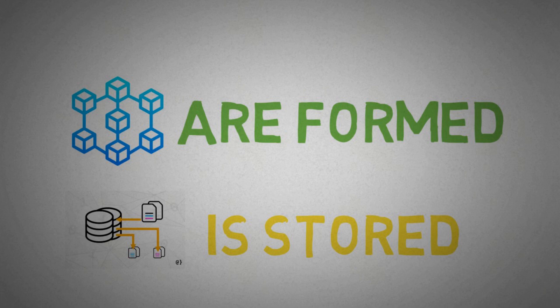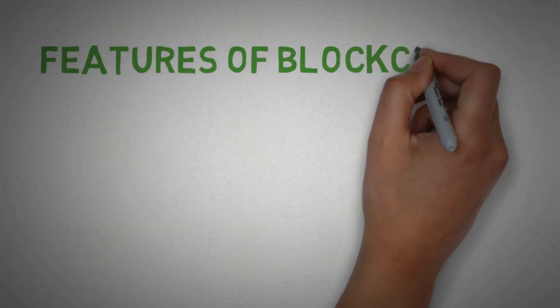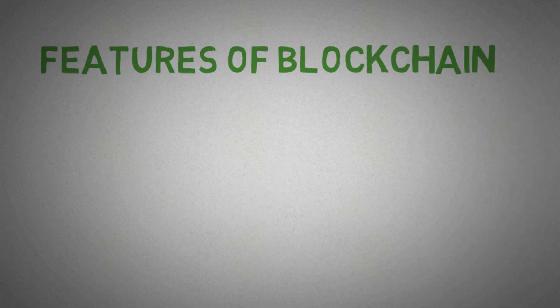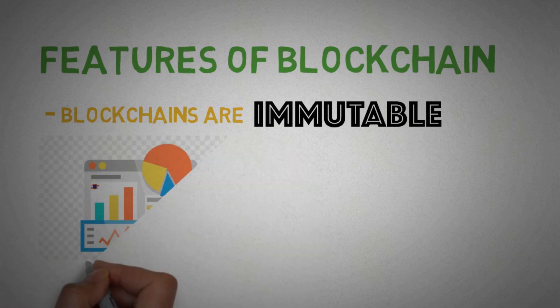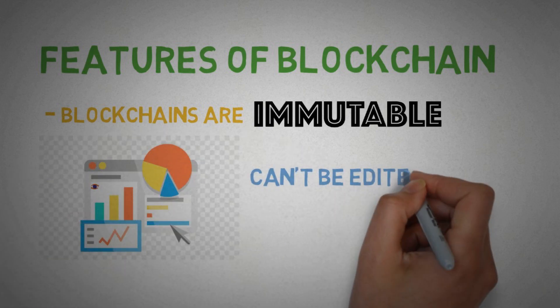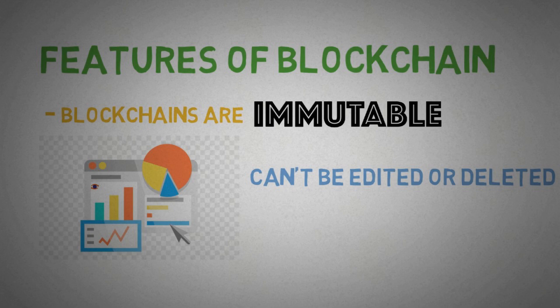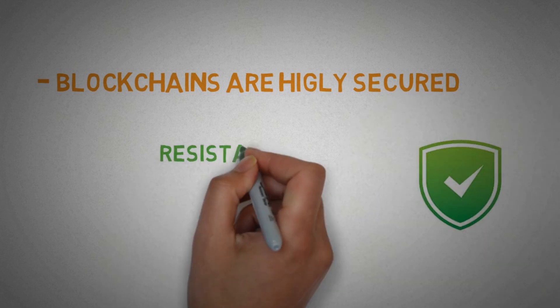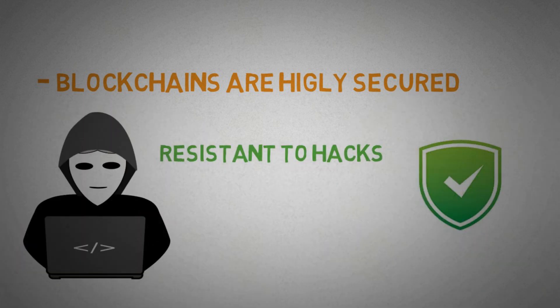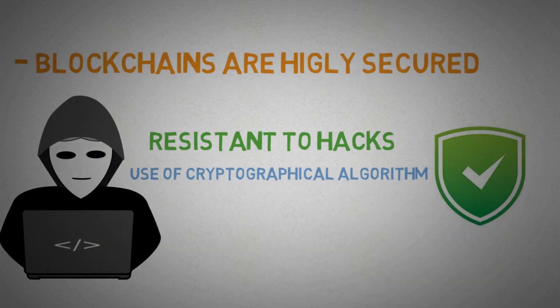Now let's talk about the features offered by blockchain. Number one: blockchains are immutable — that means the data once stored on the blockchain network cannot be edited or deleted. Number two: blockchains are highly secured and resistant to hacks, as they use cryptographic algorithms to store the data.